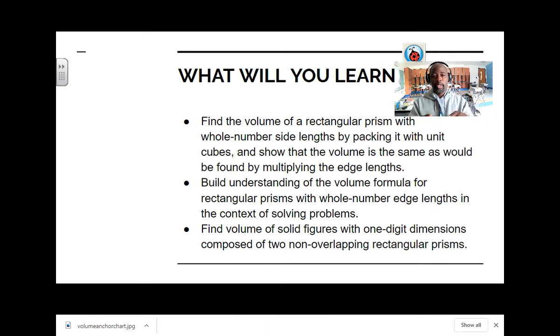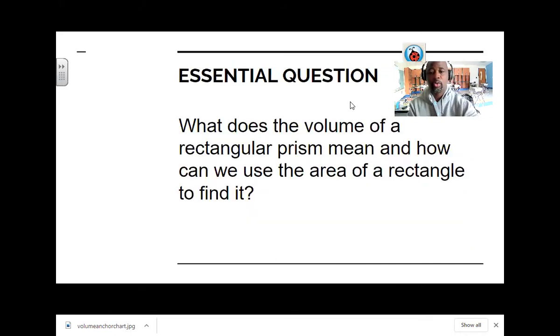Basically what you're going to do is find the volume of one, find the volume of the other, and then add those totals together. Your essential question: What does the volume of a rectangular prism mean and how can we use the area of a rectangle to find it?